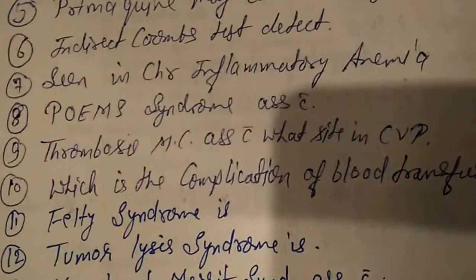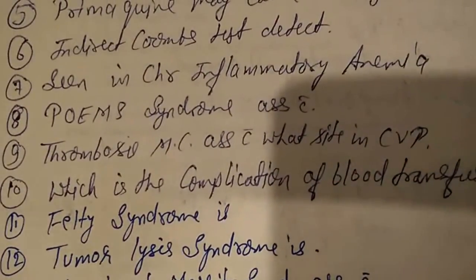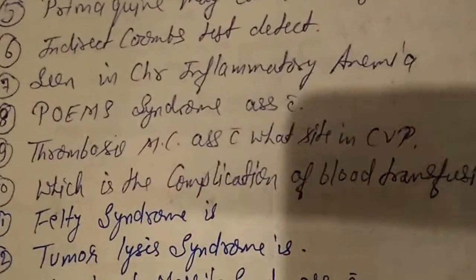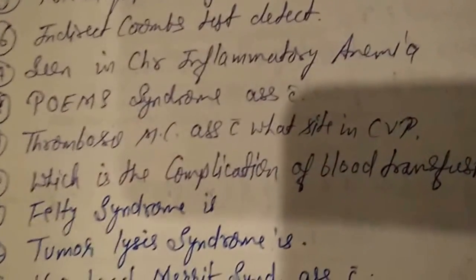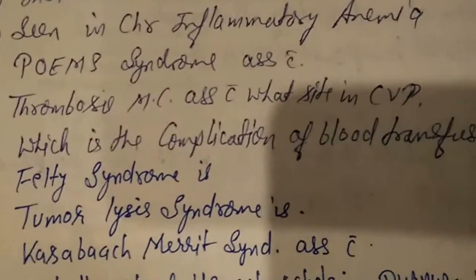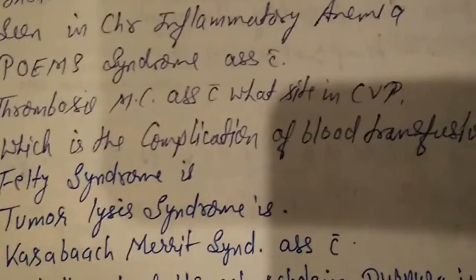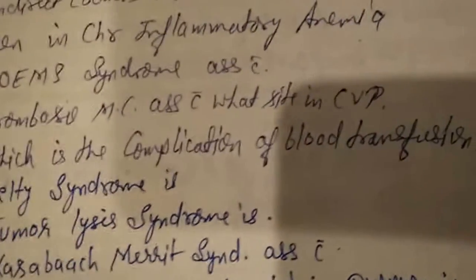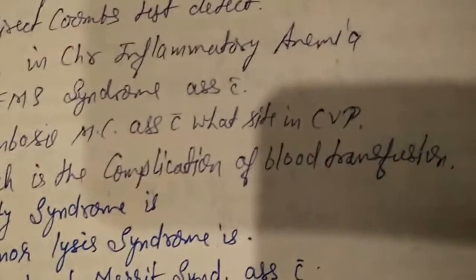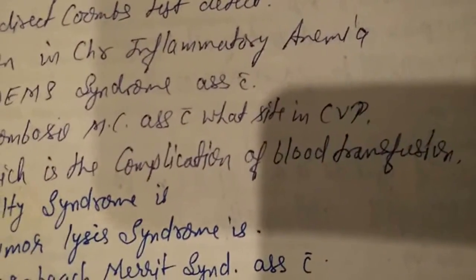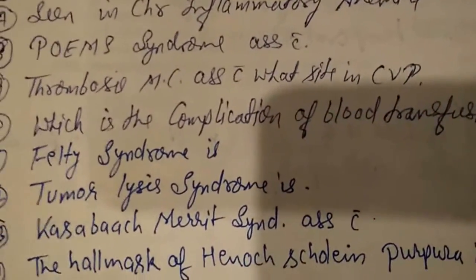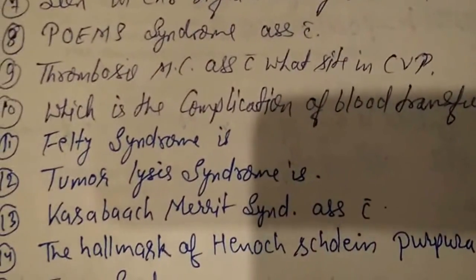Ninth question: thrombosis is most commonly associated with which site in CVT? The answer is the femoral vein — F-E-M-O-R-A-L vein.